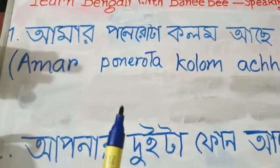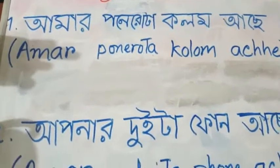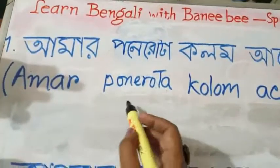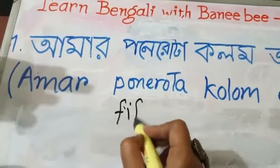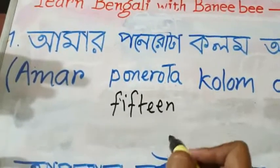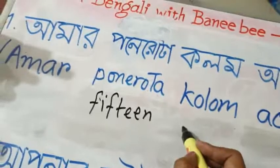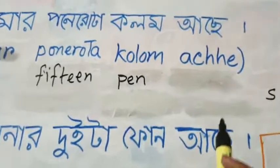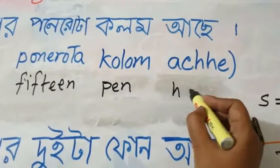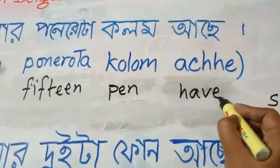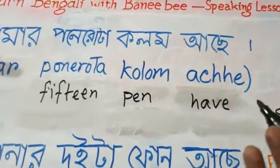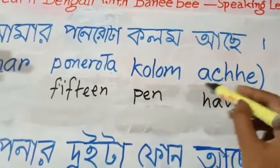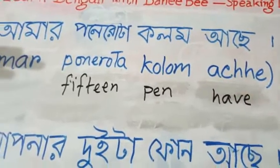If you have watched reading lessons 31 and 32, then you know that 'ponero' means fifteen, 'kolom' means pen. 'Ache' is the word for 'have.' Whenever we want to say that we have something — 'I have something' — the word is 'ache.' You need this word 'ache' every time you want to say that you have something.